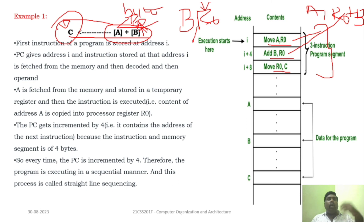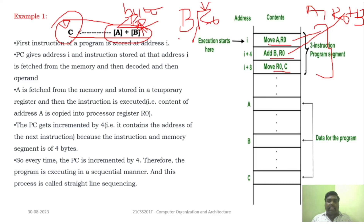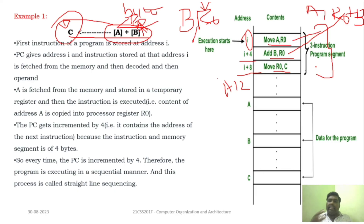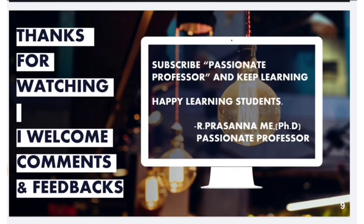Now you understand what straight-line sequencing is and the two phases involved in executing an instruction: the instruction fetch phase, where the instruction moves from PC to IR, and the instruction execution phase, where everything happens after it reaches IR. Thank you, students, for watching. Subscribe to Passionate Professor and keep learning. Thank you very much.